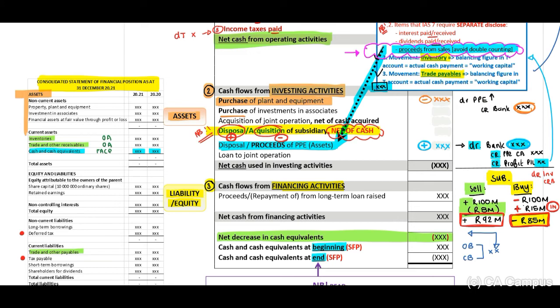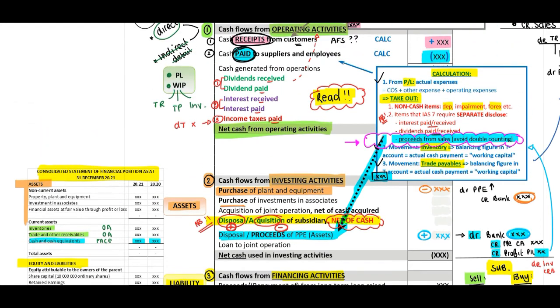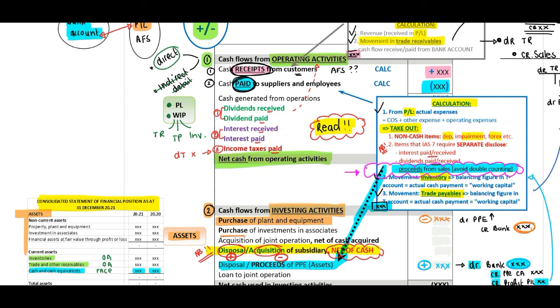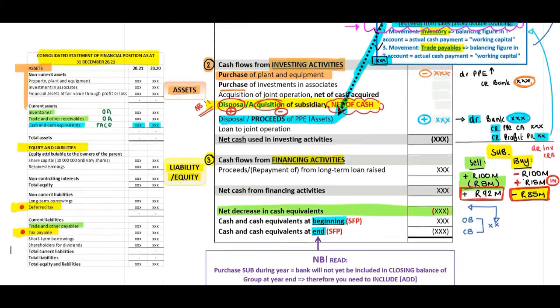Then, when we look at our cash flows from financing activities, when you look at the statement of financial position, this will be our equity and liabilities section. Therefore, again, you will have to perform reconciliation of these accounts to identify the in and the out from your bank account. Important, remember, deferred tax is non-cash and your tax payable is included as a separate line item on the face of your cash flow statement. But you need to read to identify if it's included in operating, investing or financing activities.